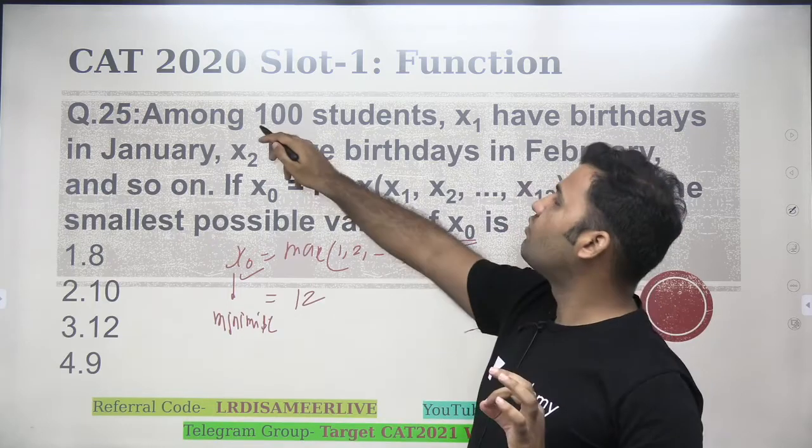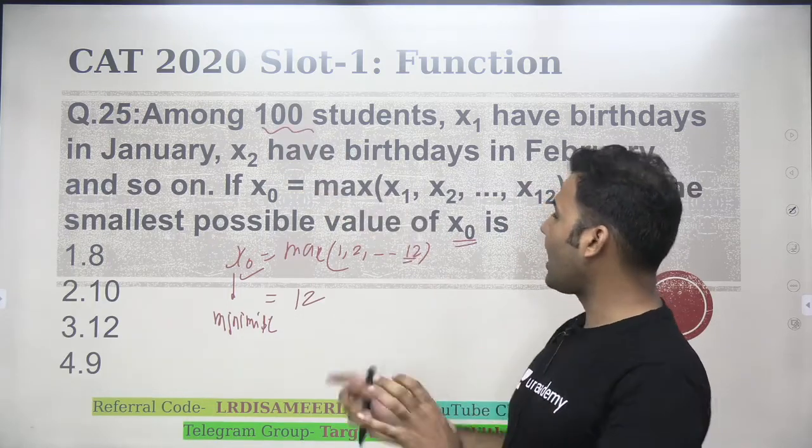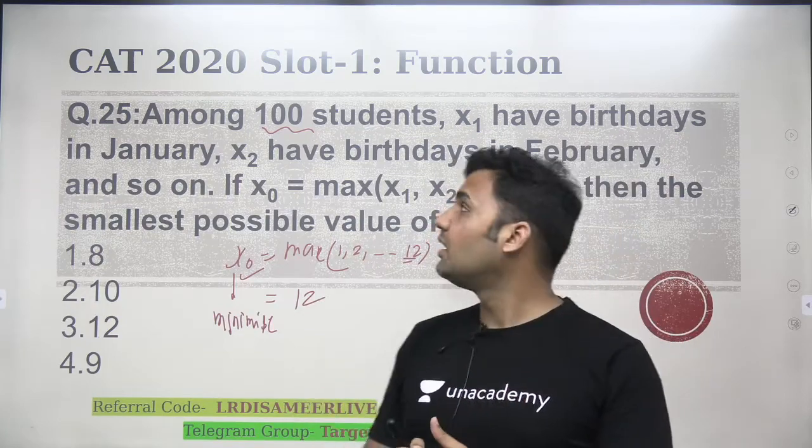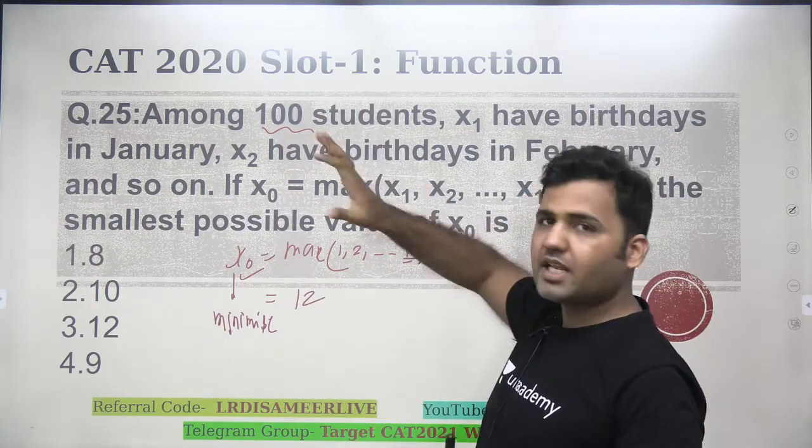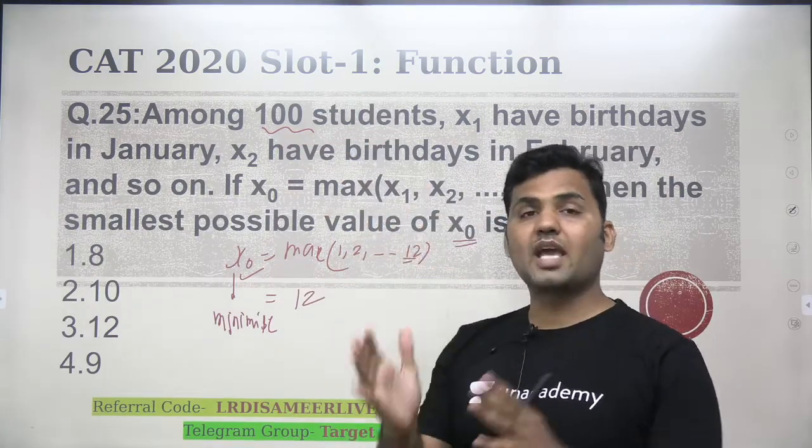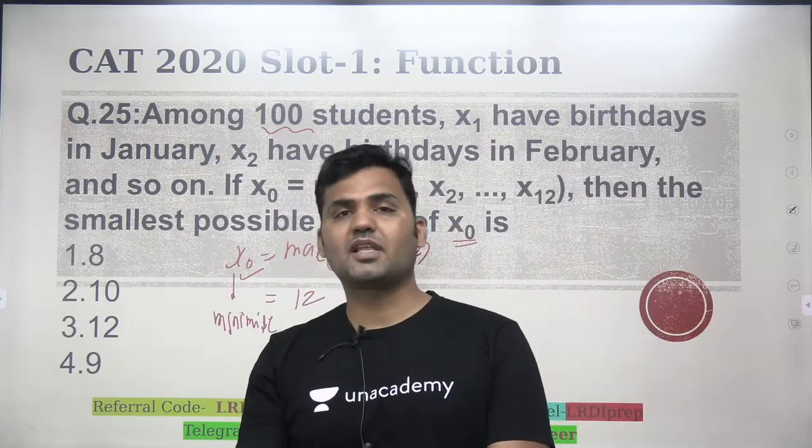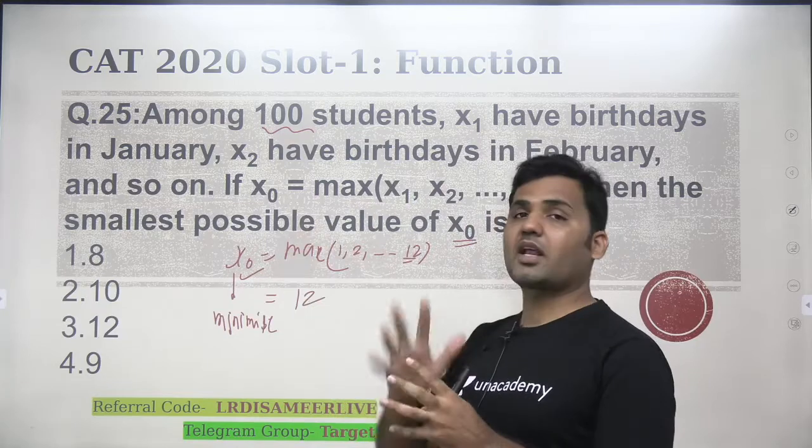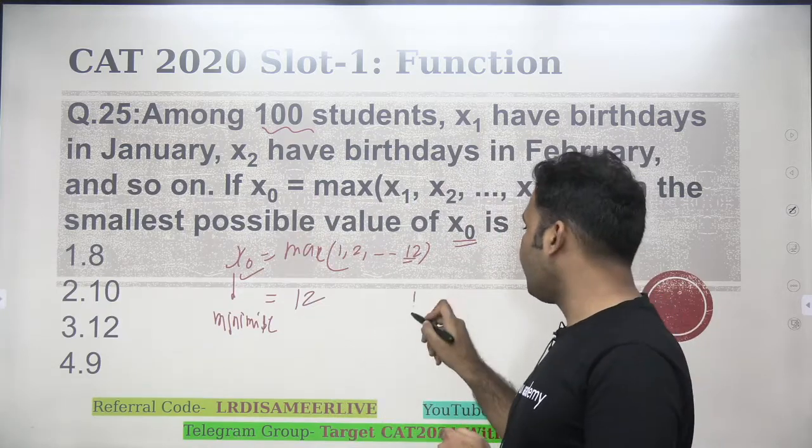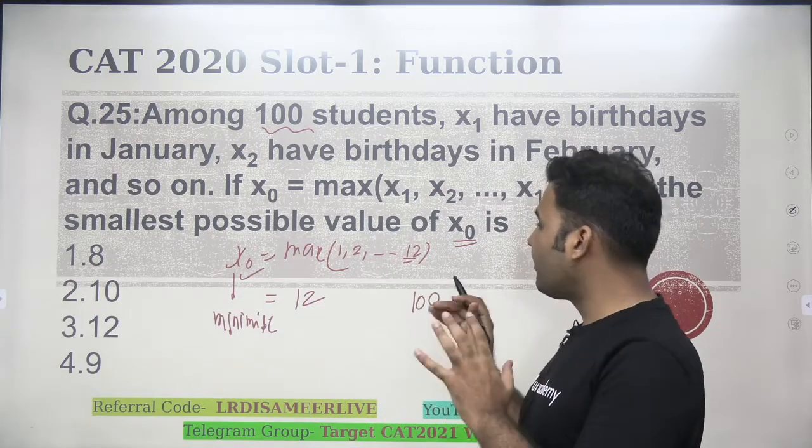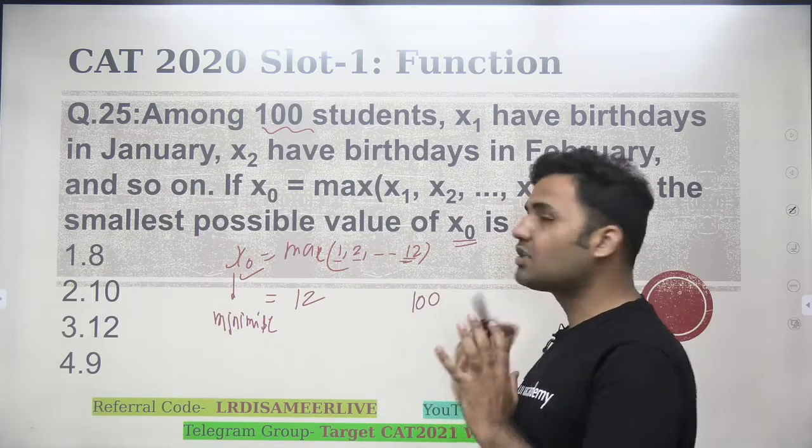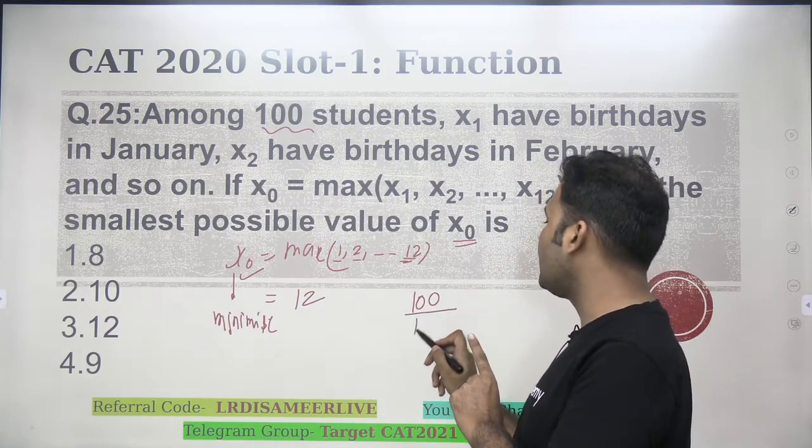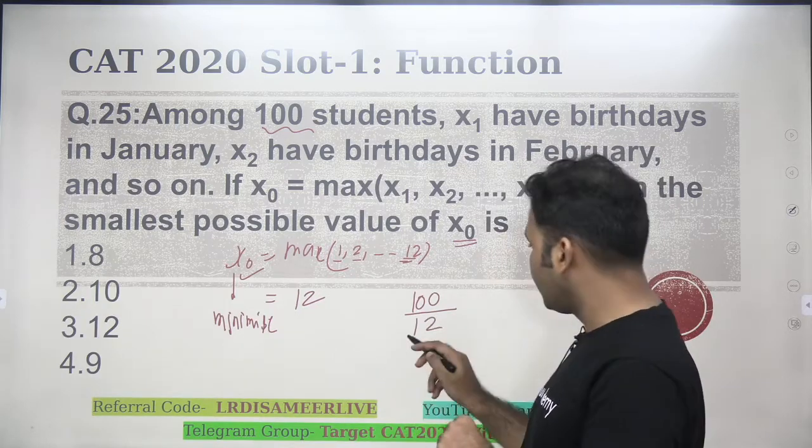If I want to minimize the x0 value, I need minimum possible values in the bracket, but there are total 100 students that I have to put over 12 values. So there are 12 months, and 100 students have birthday in the different month. You can choose as many students in a particular month having birthday as you want, but you have to make sure x0 has to be minimum. Now, if I have to divide, if I want to minimize each of this value, I will divide the 100 students equally among all the 12 months.